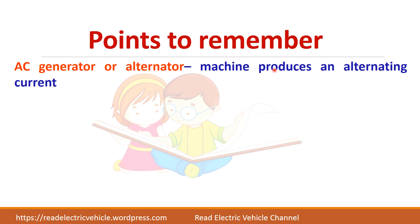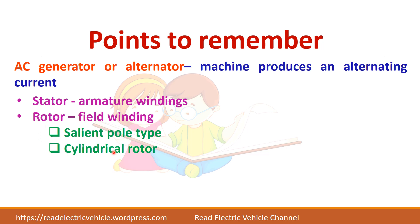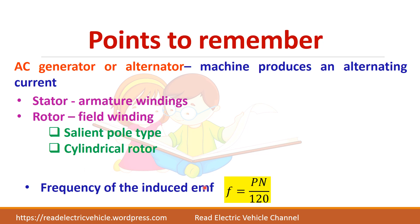To summarize: an AC generator, otherwise called an alternator, is a machine which produces alternating current. In its stator it has the armature winding and in its rotor it has the field winding — just opposite to a DC generator. There are two types of rotor: salient pole rotor and cylindrical rotor. The frequency of the induced EMF is given by F = PN/120, where P is the number of poles and N is the speed in RPM.